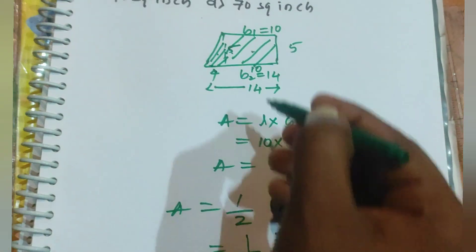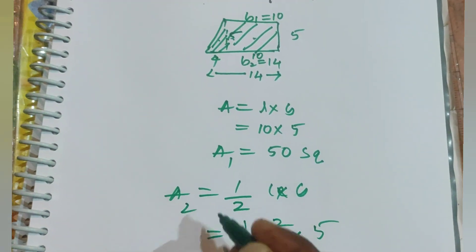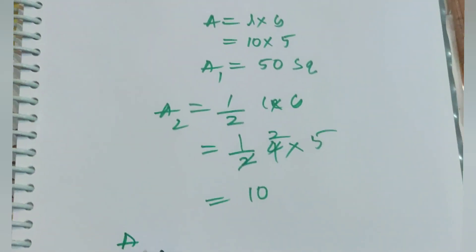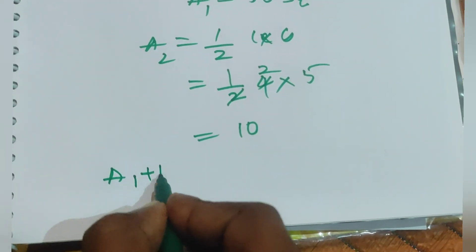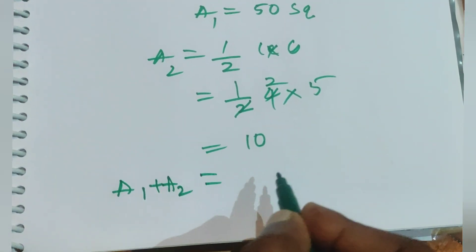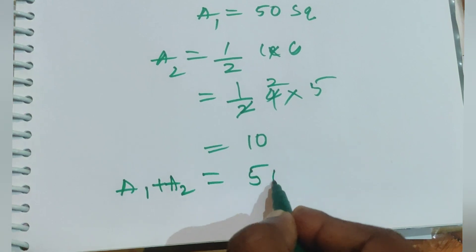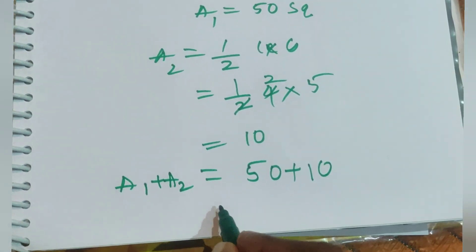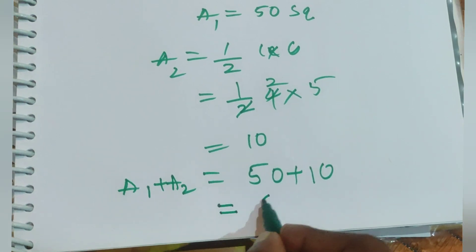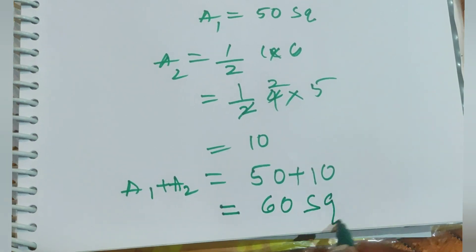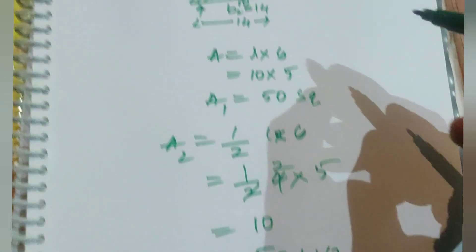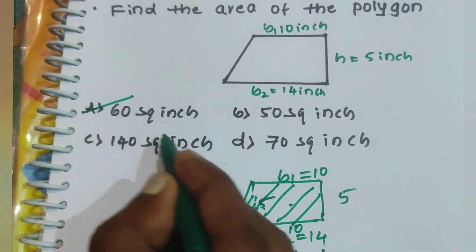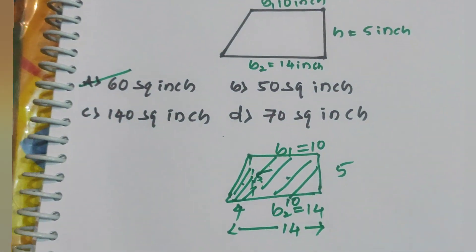Let A1 and A2 be the two areas. Combining them: A1 + A2 = 50 + 10 = 60 square inches. That option is correct — right answer. Thank you.